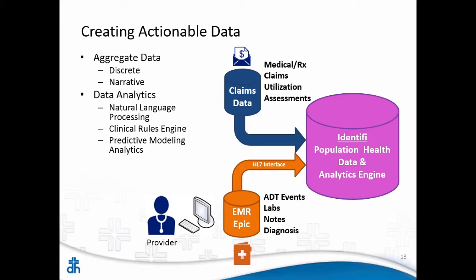All that information goes into what we call the population health analytics engine — Identify. It crunches the numbers, slices and dices, and picks out who are the patients — maybe that 5% — that we really need to be concerned with. It looks at the whole population, but from predictive modeling it says: if there are 100 people in this room, the people in the front row are the highest risk, the percent of patients who are the highest risk drivers.